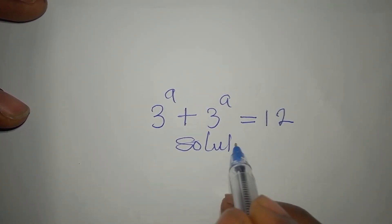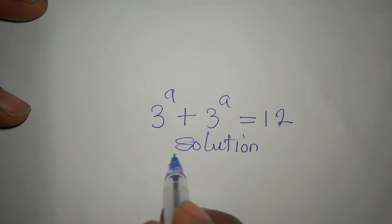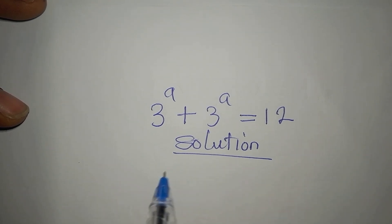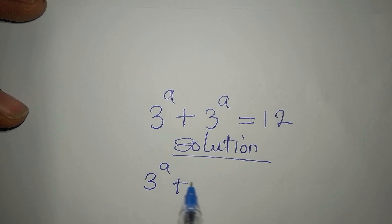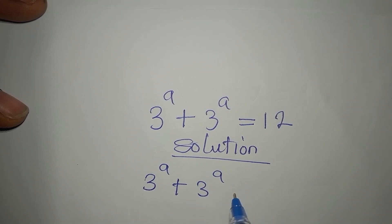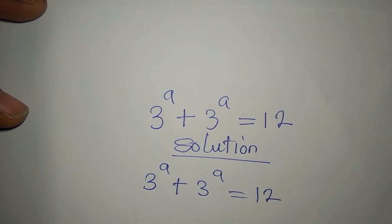Okay, here we have this exponential equation: 3 to the power of a plus 3 to the power of a equals 12. Okay, so how do we deal with this?